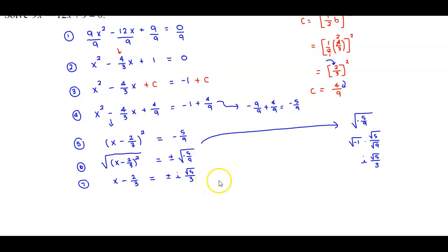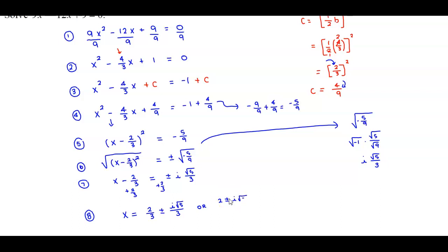Now we add 2 thirds to both sides to isolate x. Adding 2 thirds to both sides gives x equals 2 thirds plus or minus i times the square root of 5 over 3. We can also write this with a common denominator as 2 plus or minus i times the square root of 5, all over 3.